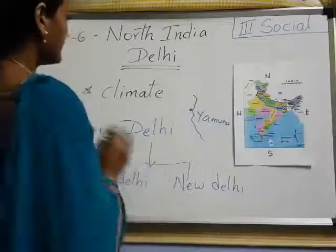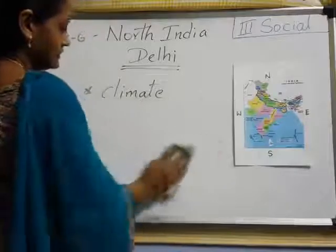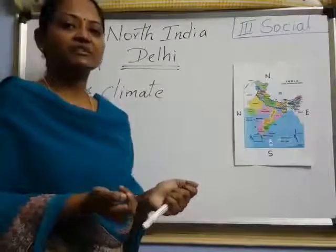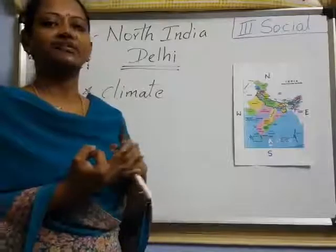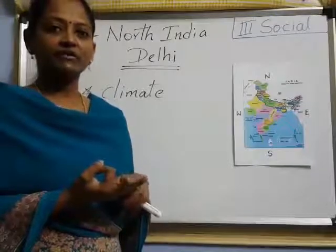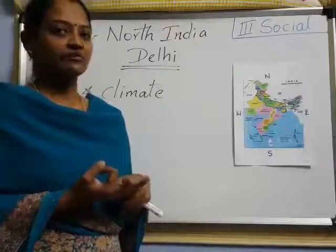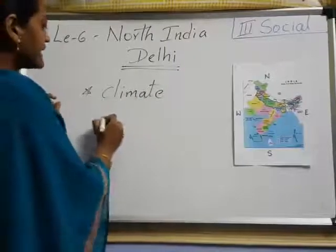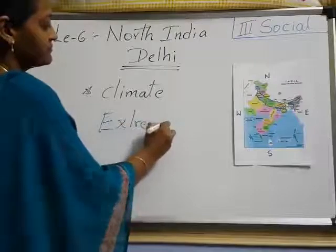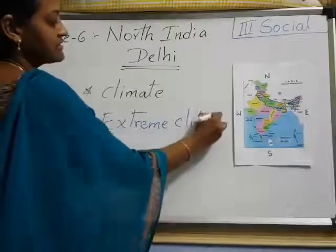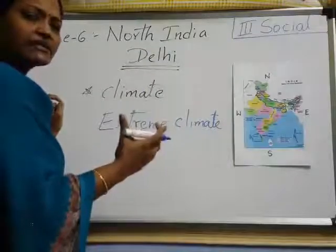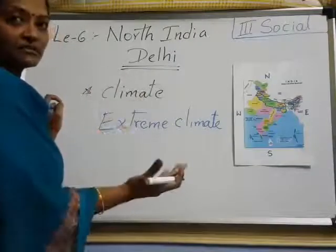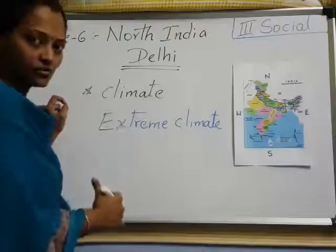Now we are seeing about climate. First one is about climate. In Delhi, mainly — climate means nothing but — we have summer, winter, rainy season — all these are nothing but climate. Now in Delhi, we find extreme climate. Extreme climate means very, very high. High means hot during some months, and very cold during some other months. Which months are very hot and which months are very cold? We will see now.